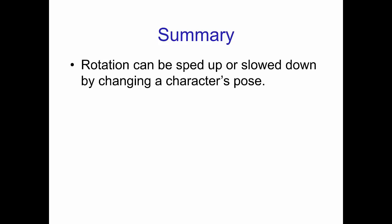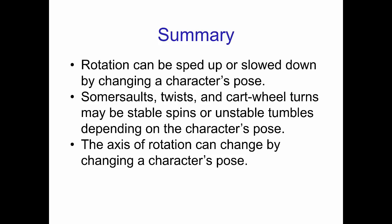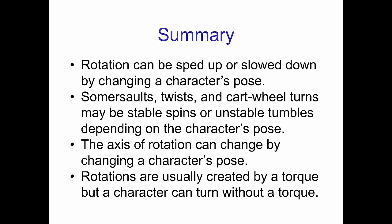So in summary: rotation can speed up or be slowed down by changing a character's pose. Somersaults, twists, and cartwheel turns may be stable spins or unstable tumbling depending on the character's pose. The axis of rotation can change by changing a character's pose — for example, a character can add or remove a twist from a somersault. And rotations are usually created by a torque, but a character can also turn without a torque, that is, without pushing off of anything.